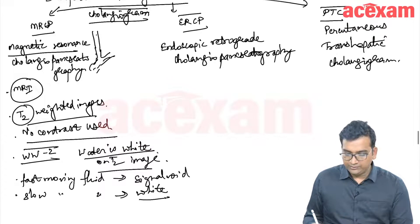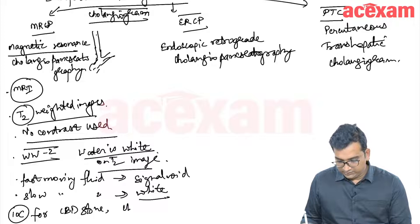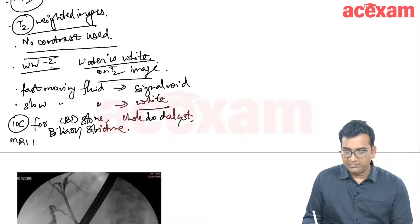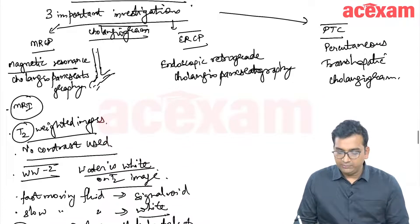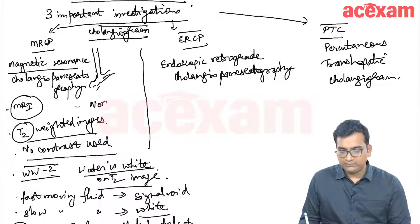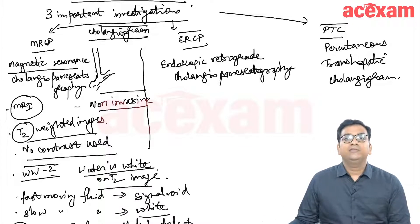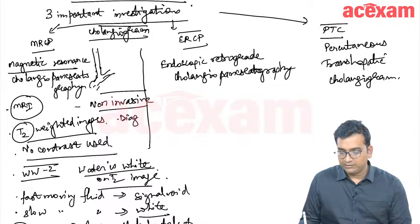MRCP is the investigation of choice to detect CBD stones, choledochal cysts, biliary strictures, and MRI with MRCP is the investigation of choice for cholangiocarcinoma. The advantage of MRCP is that it is non-invasive, so the risk or complications are very less. However, even if we can see a CBD stone, we will not be able to remove it. So MRCP is diagnostic but not therapeutic.